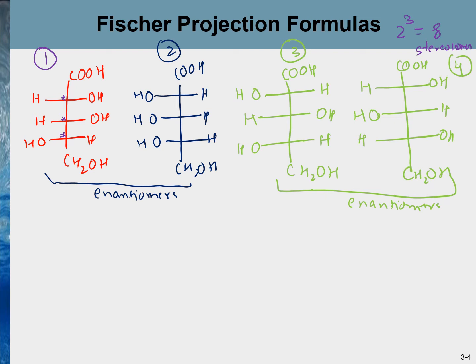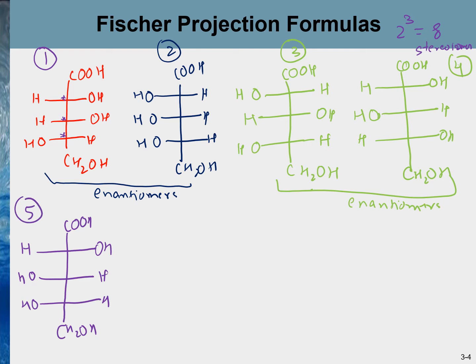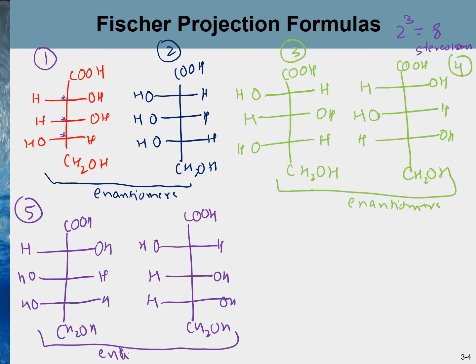For number five, we switch the middle OH and hydrogen from number one while keeping everything else the same. Drawing the mirror image of number five gives number six. These two are also enantiomers of each other, but they are diastereomers relative to all of numbers one through four. All six so far are stereoisomers of each other.